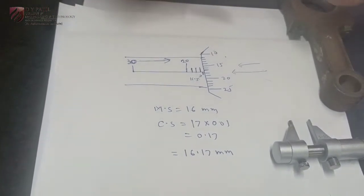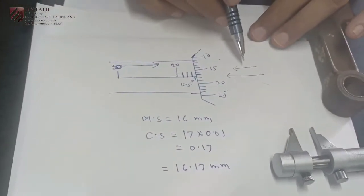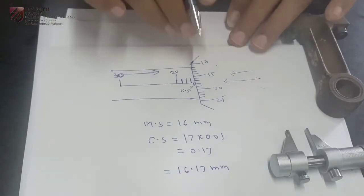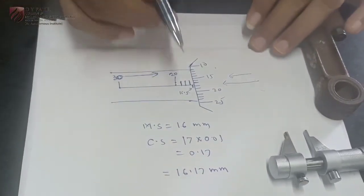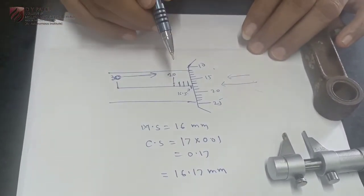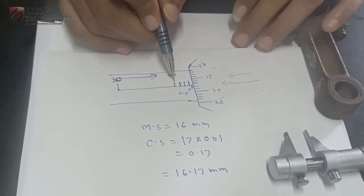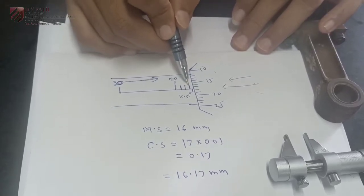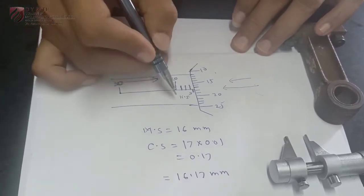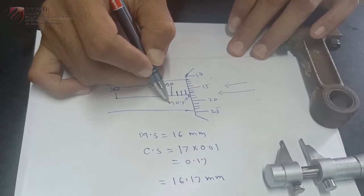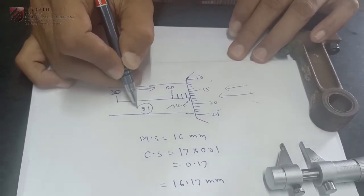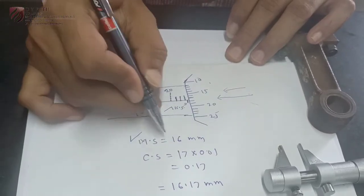When we rotate the thimble in clockwise direction, the thimble will start covering this reading. So you have to read that reading which has been covered. The reading which has been covered is actually not visible to you. For example in this particular case this is 20, 19, 18, 17 and this will be 16.5. So 16.5 is visible to me. That means division number 16 has been covered. That's why main scale reading is 16mm.